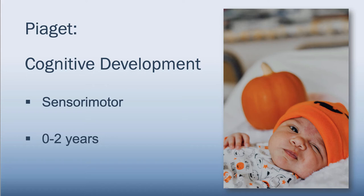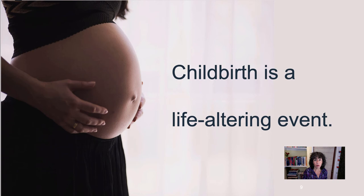The other piece Piaget talks about is goal-directed actions — the baby planning something, like batting their hand at a swinging toy. They're planning this motoric action, and there's a goal: if they're batting a swinging toy, the goal is that they actually hit the toy and the toy goes swinging. They are learning that they have an effect on their world. Those are the two theorists we're going to focus on for this period of infant development, and as we move through the lifespan, we'll look at different aspects of theory.